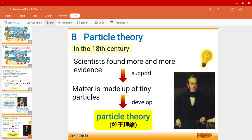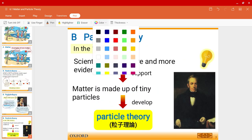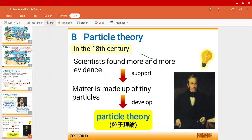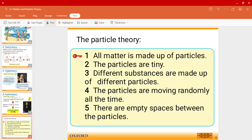So right around the 18th century mark, scientists eventually started to find some more evidence to support this theory, the particle theory, about how matter is made up of tiny particles. And that is how they developed particle theory. So the particle theory actually has five main steps, or you can say five statements over here.